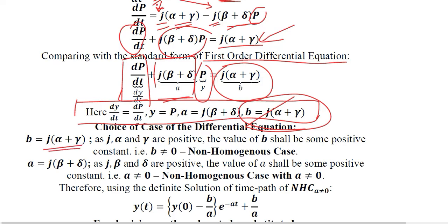Breaking down b, we find J, alpha, and gamma in it. J is positive, alpha is positive, and gamma is positive — as already established. Multiplying three positive values with positive signs gives a positive result, not zero. Therefore b is not equal to zero, meaning we have a non-homogeneous case. Within the non-homogeneous case there are two sub-cases, so we must also look at the value of a.